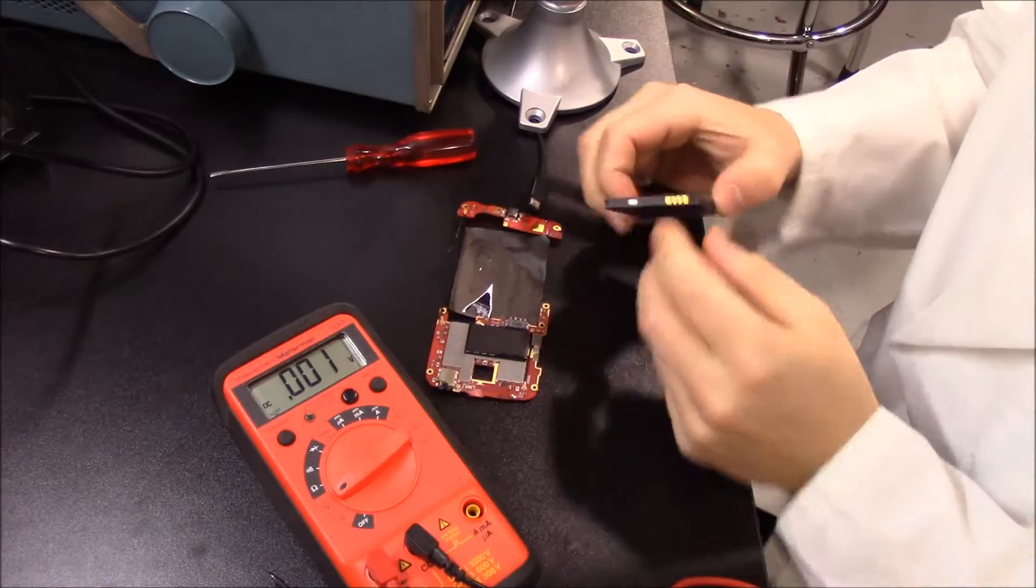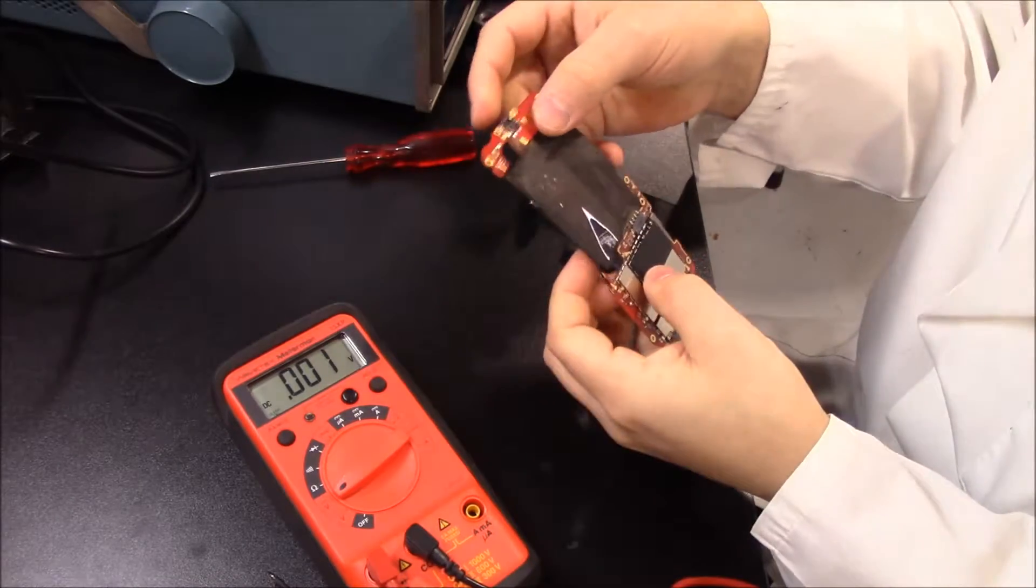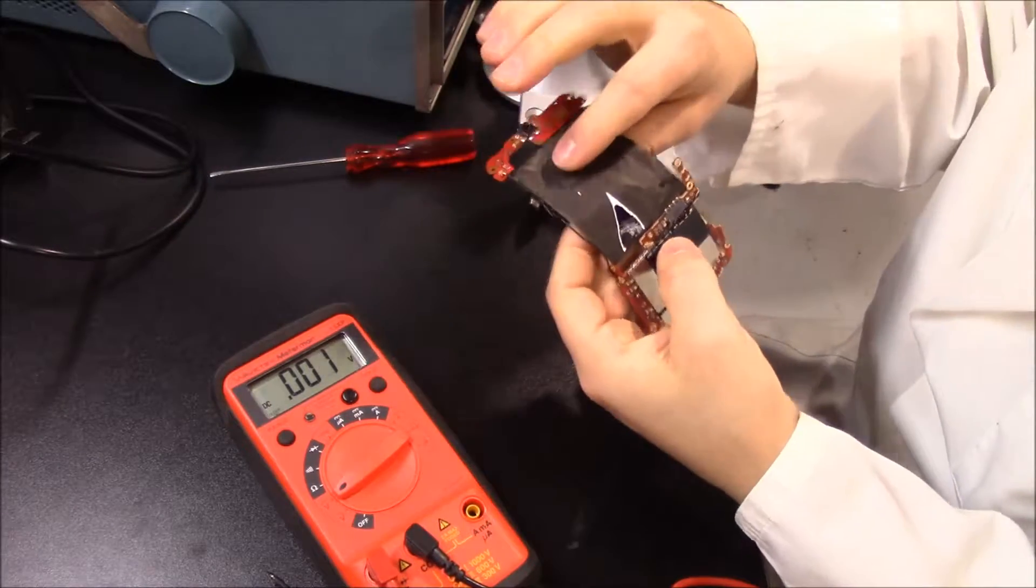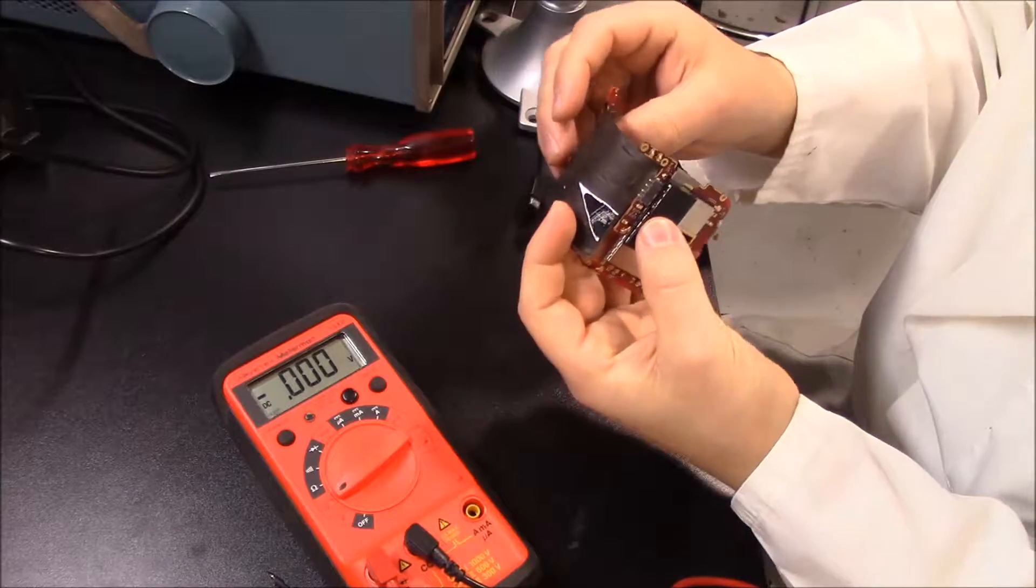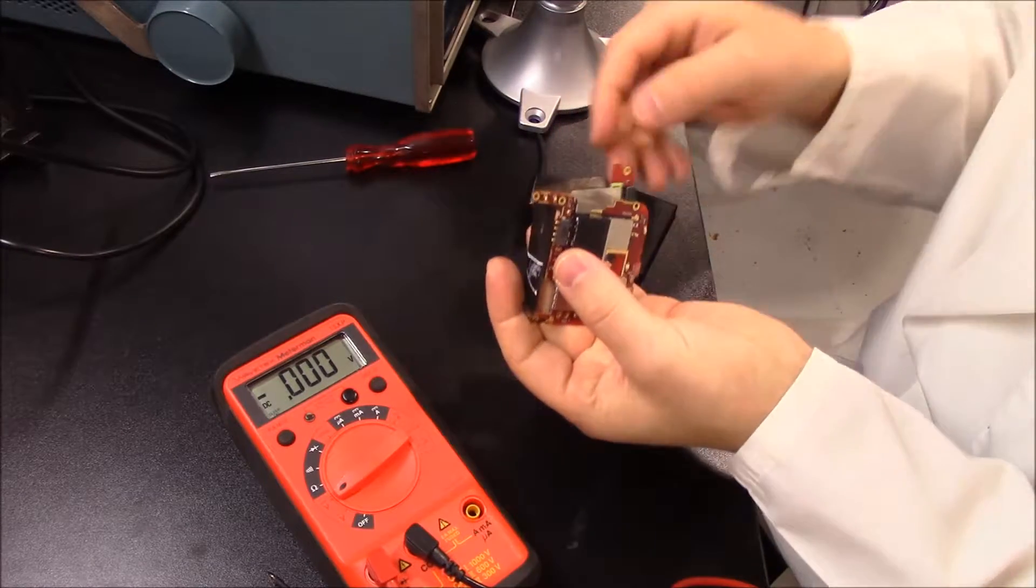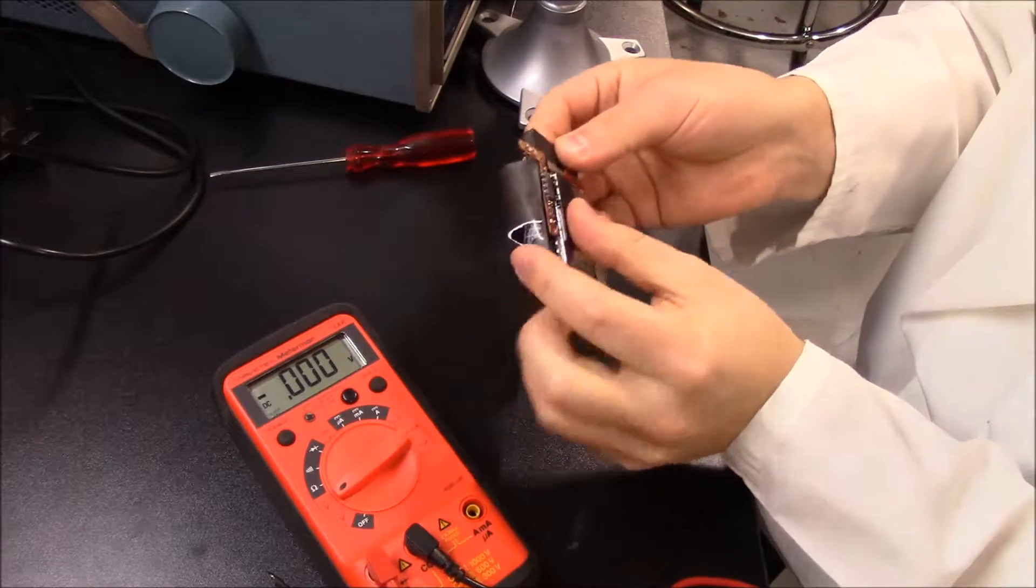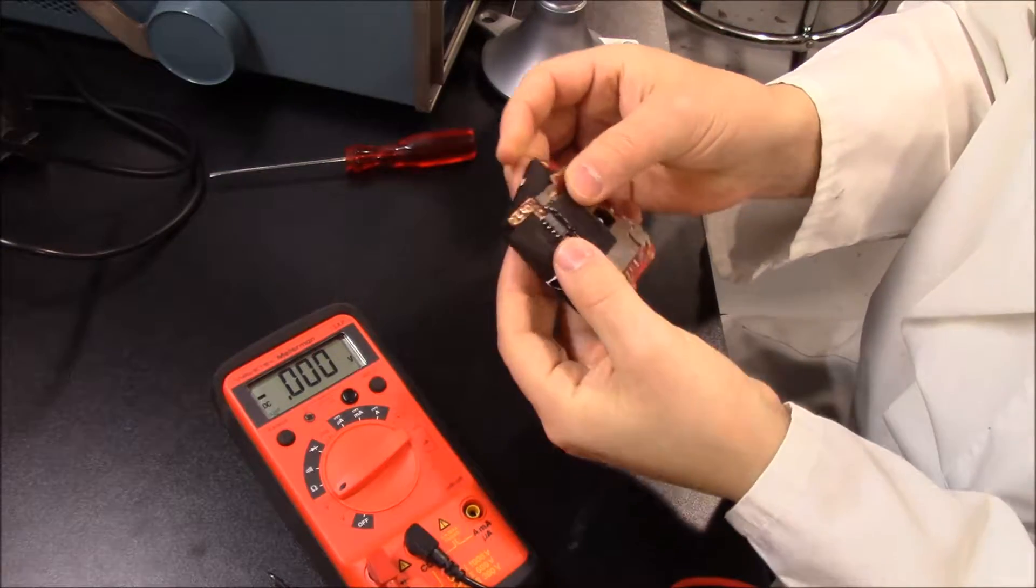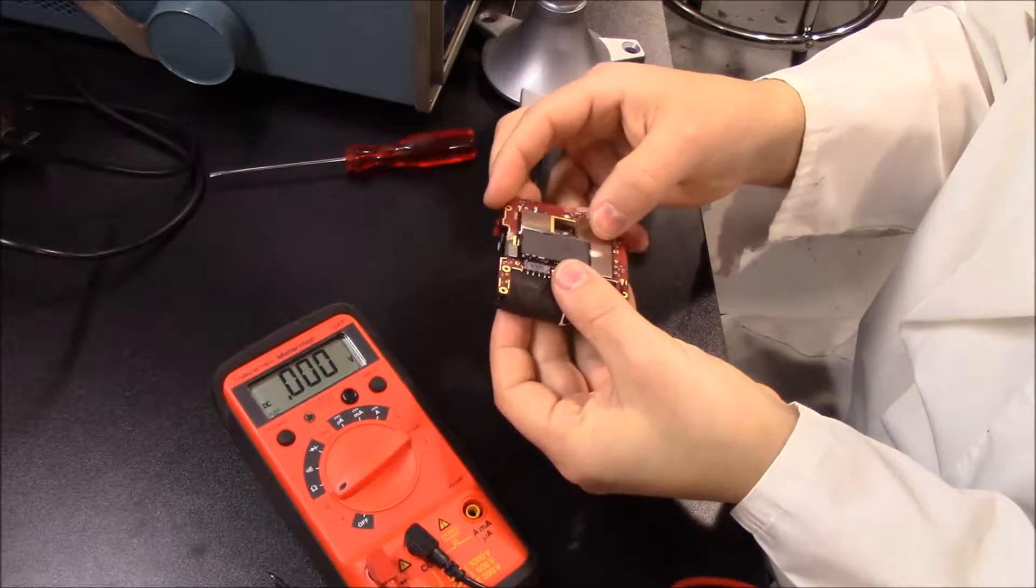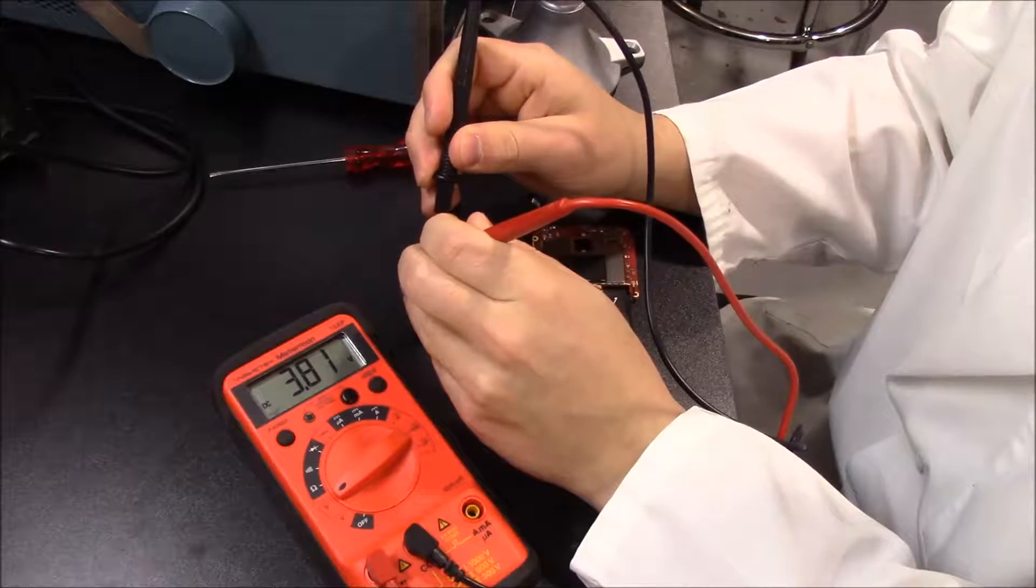I'm going to solder these points to these points and then just kind of fold this gently. Just kind of fold this guy like so. And gently power my battery in there. Very, very nice and gently. I get my 3.8 volts.